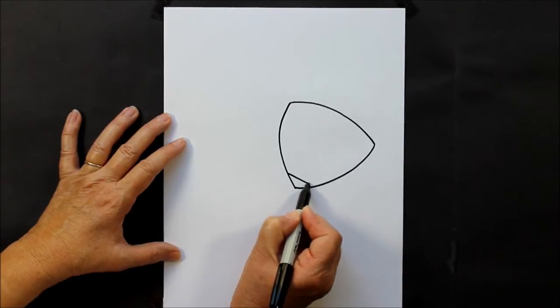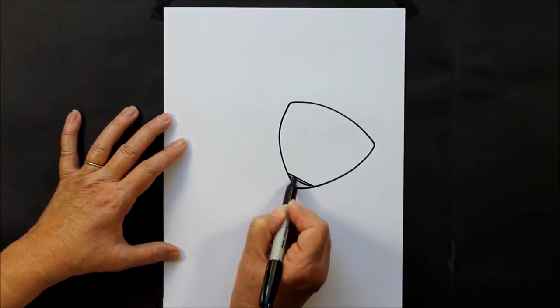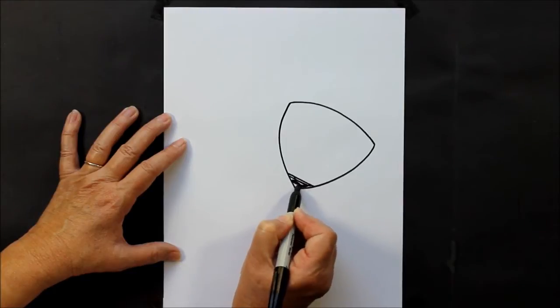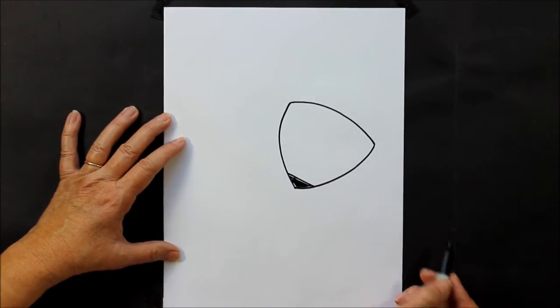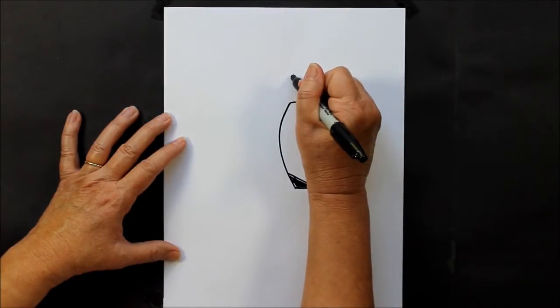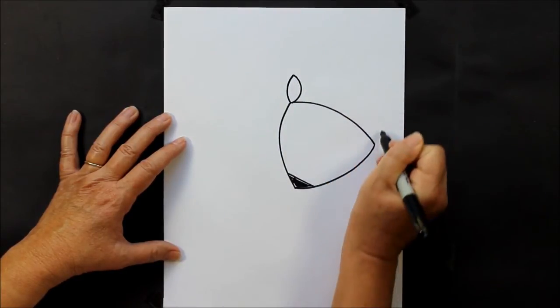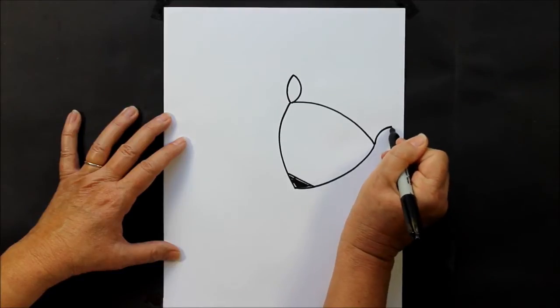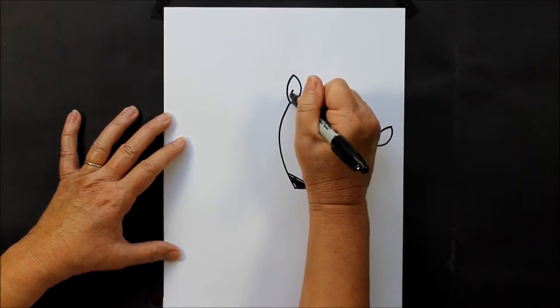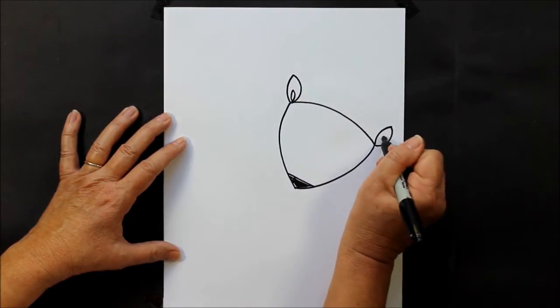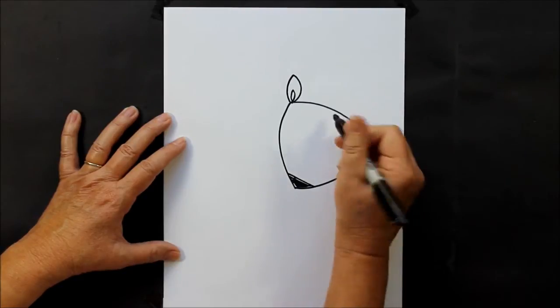At the bottom we are going to make a line across the very bottom pointy area and fill that in. That is going to be the deer's nose. We're going to go back up and make some ears, which are just some curved lines like this, and fill them in with more curved lines.